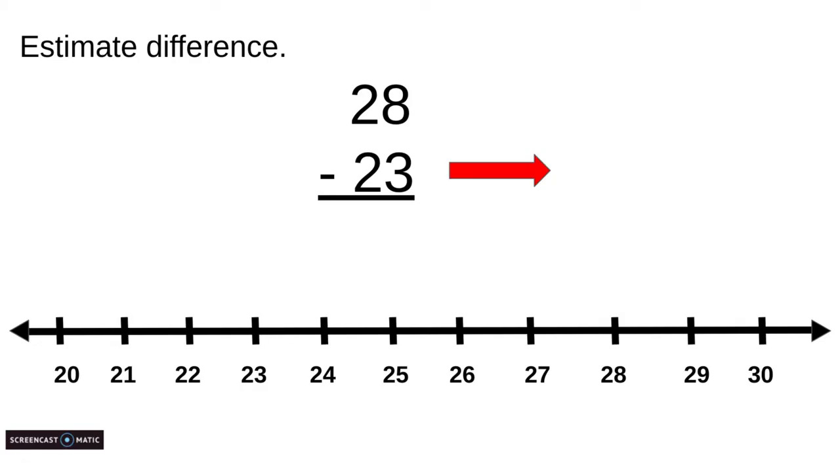We are going to find the closest 10 to 28 first. Here is 28 on the number line in blue. Is 28 closer to 20 or 30? Let's see. One, two. It is two hops away from 30, so it is definitely closer to 30.